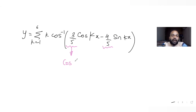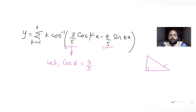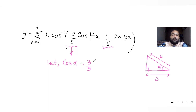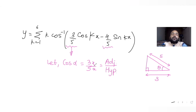Let's say cos α equals 3/5. If I draw a right angle triangle, cos θ is adjacent upon hypotenuse. So adjacent is 3x and hypotenuse is 5x, where x is a common multiple present in the terms 3x and 5x.